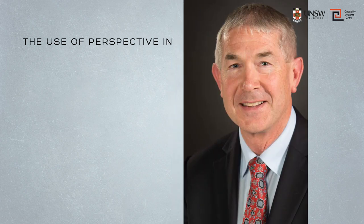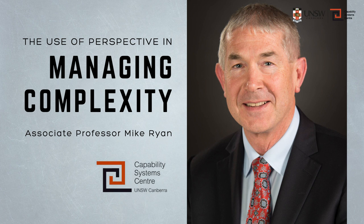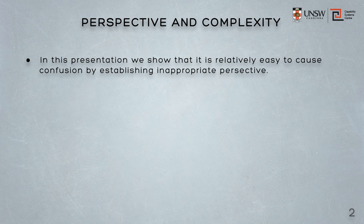Most research into complexity doesn't address directly the fundamental issue that the complexity of any particular matter or thing has a significant subjective component, in which the degree of complexity depends on your frame of reference. Yet we can show readily that the perceived complexity of an entity under consideration can vary dramatically if different perspectives are taken. This presentation illustrates that it's relatively easy in any context to state that context in such a manner as to cause confusion by establishing a perspective that incorporates all dimensions simultaneously in a two-dimensional view.